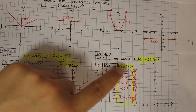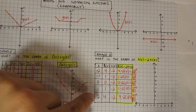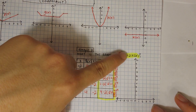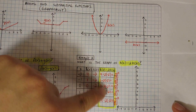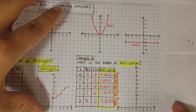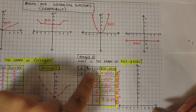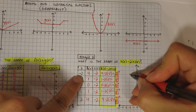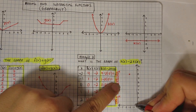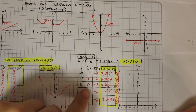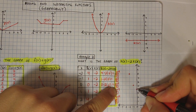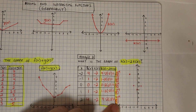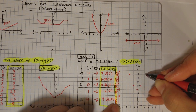So my values are: at negative 2 the value is 8, at negative 1 the value is 5, at 0 the value is 4, at 1 the value is 5, and at 2 the value is 8. Now all I have to do is graph it. At negative 2 I go up 8, at negative 1 I go up 5, at 0 I go up 4, at 1 I go up 5, and at 2 I go up 8.